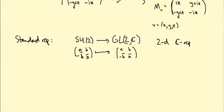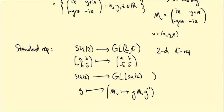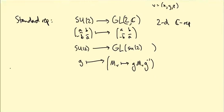Are there any more representations? Yes — we came across one more. We had a map that took an element G of SU(2) and produced a transformation sending M_v to G·M_v·G⁻¹. So we're sending a group element to a transformation that takes M_v to G·M_v·G⁻¹. This is an element of GL(su(2)) — it takes an element M_v of little su(2) and produces a new element G·M_v·G⁻¹, which can be written as M of something else. This is a perfectly valid linear map on su(2).